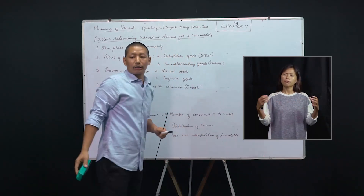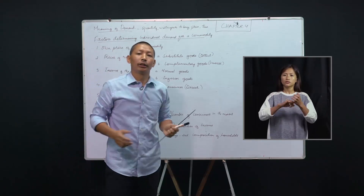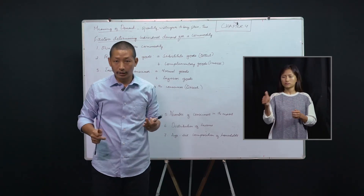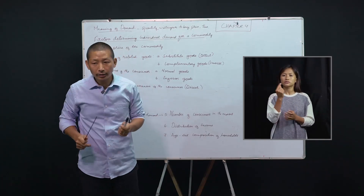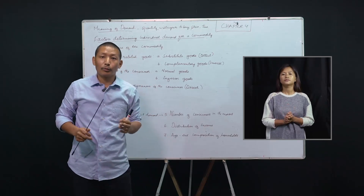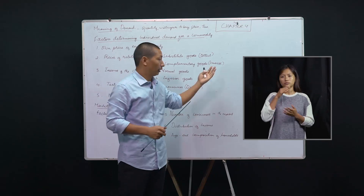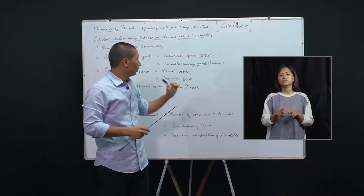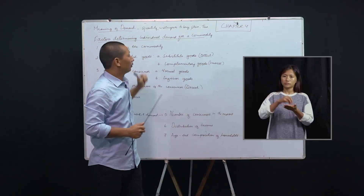If you don't want to drink tea, you can always drink coffee. They can be substituted for one another. Likewise, if you don't want to use Pepsodent, you can always use Colgate. If you don't want to eat apple, you can go for mango or maybe banana, and so forth. These are goods which can be replaced by another good — those are called substitute goods.